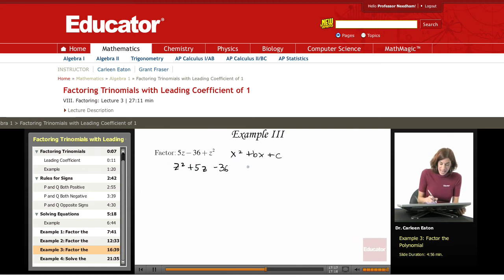So I'm looking at this, and I see that I have c is less than 0. So when c is less than 0, p and q have opposite signs. One's going to be positive, one is going to be negative.